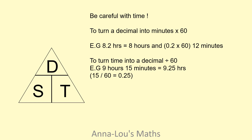The same works the other way: 9 hours 15 minutes equals 9.25 hours — divide 15 minutes by 60 to get the decimal. Also, some questions involve miles per minute. Since we speak in miles per hour, multiply by 60 to convert miles per minute into miles per hour.